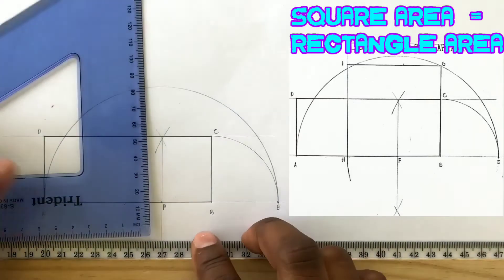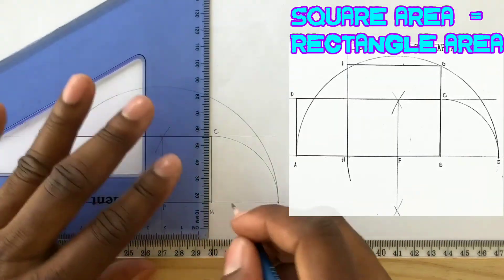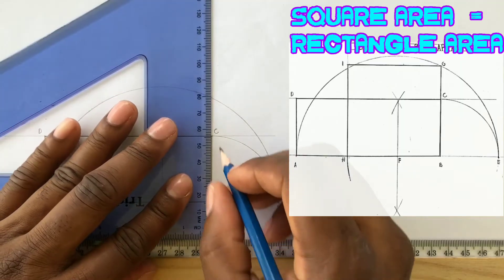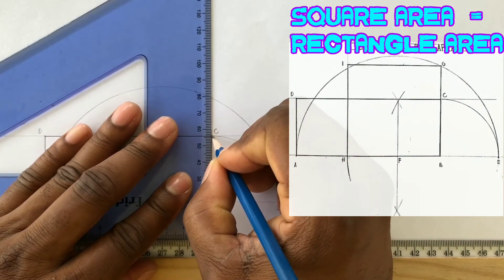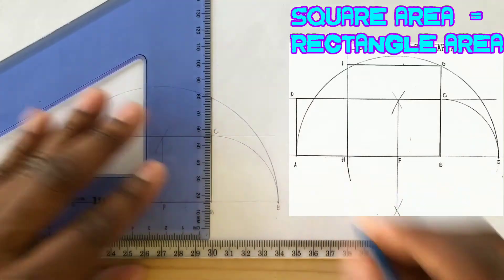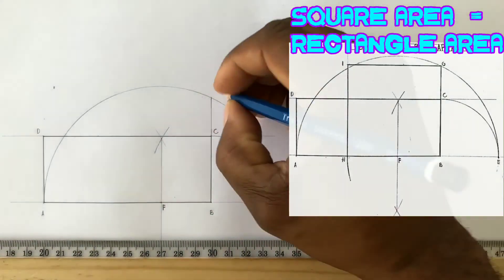We will now extend our BC line from point C to touch our semicircle, giving us point G. Label point G.